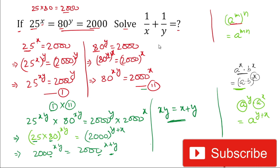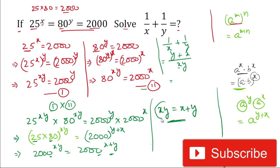Now we solve the main part: 1/x + 1/y. Taking the LCM of the denominators x and y, which is xy, we get (y + x) / xy. In place of x + y we can write xy (since xy = x + y), and the denominator is also xy. So the numerator and denominator are the same and cancel, giving the answer 1.